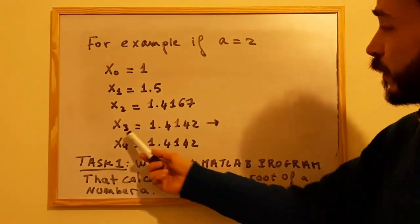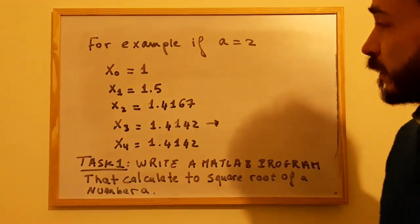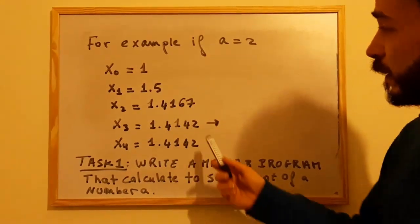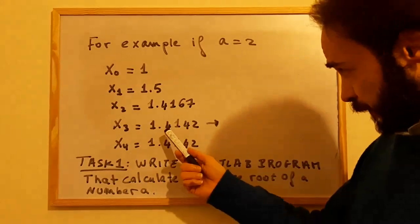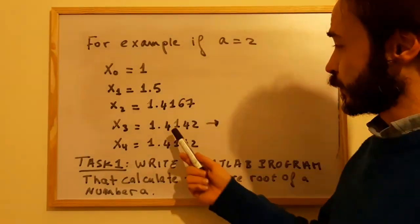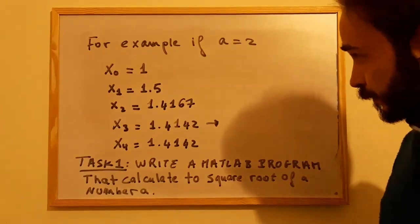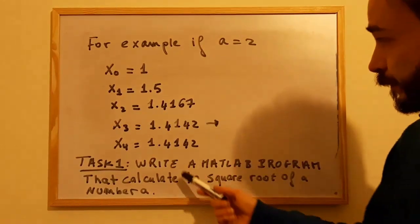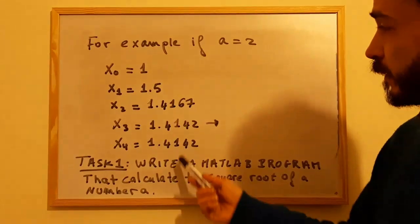As you can see, this algorithm needs only three steps to converge. This is the solution for the square root of 2 up to four-digit precision, and the next iteration will not give you anything better than this.